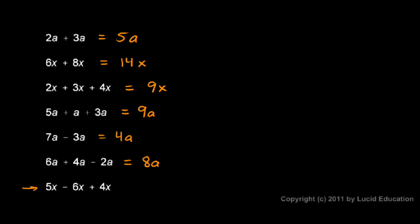And in this one, 5x minus 6x. Well, 5x minus 6x, that gives me a negative 1x, and that's okay to have a negative number there. 5x minus 6x is negative 1x, and then I add 4x. So negative 1x plus 4x gives me 3x.